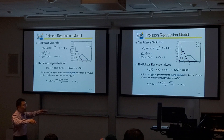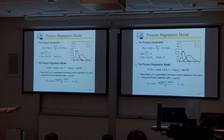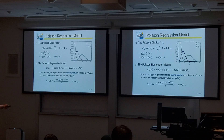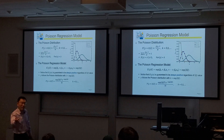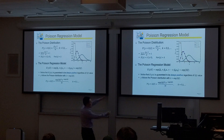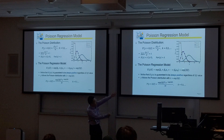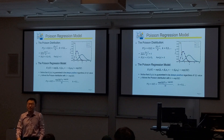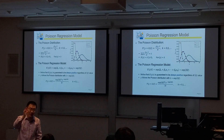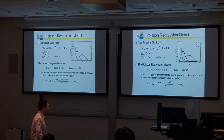This is how we link all the x variables to the model. y follows this Poisson distribution according to those probabilities, and for this Poisson distribution, we set lambda equal to all those x variables in the exponential form. If those x variable values change, they will change lambda, and as a result, they will change the distribution of y. This is the basic Poisson setup.